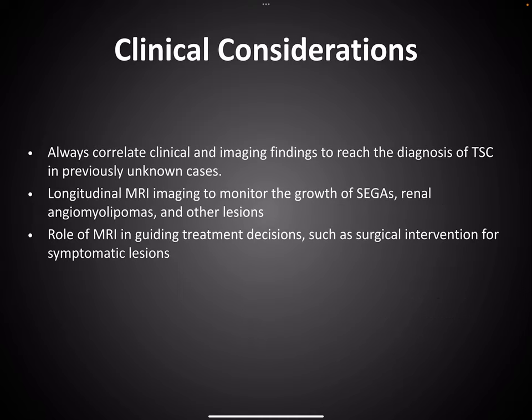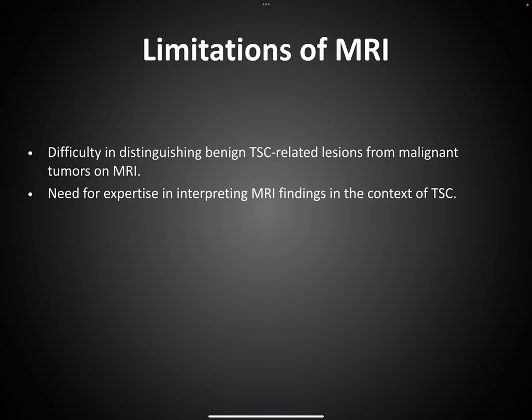Clinical considerations: we always take into account clinical stigmata and clinical findings along with imaging findings to reach a diagnosis of TSC in previously unknown cases. We can also use MRI to monitor the growth of SEGAs, renal angiomyolipomas and other lesions, and MRI helps guide treatment decisions such as surgical intervention for symptomatic lesions. Limitations include difficulty in distinguishing TSC-related lesions from malignant tumors on MRI, and the need for a certain level of expertise in interpreting MRI findings in the context of TSC.